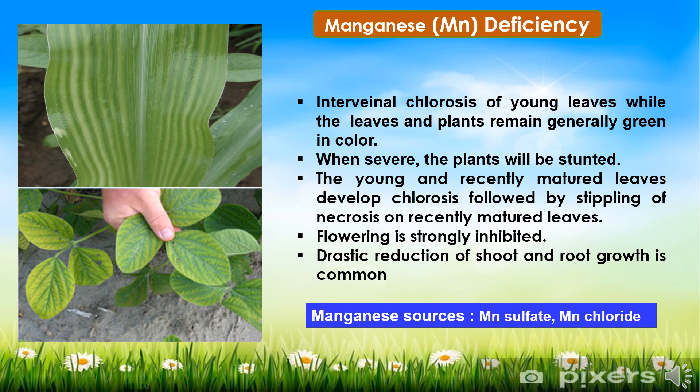In deficiency symptoms of manganese, the plant will show interveinal chlorosis of young leaves, while older leaves and plants will remain generally green in color. In severe deficiency, the plant will show stunted growth symptoms. The young and recently matured leaves develop chlorosis followed by stippling and necrosis. Flowering is also strongly inhibited, and there will be a drastic reduction of shoot and root growth, which is a common symptom of manganese deficiency. To overcome it, manganese sulphate or manganese chloride should be applied in a timely manner.